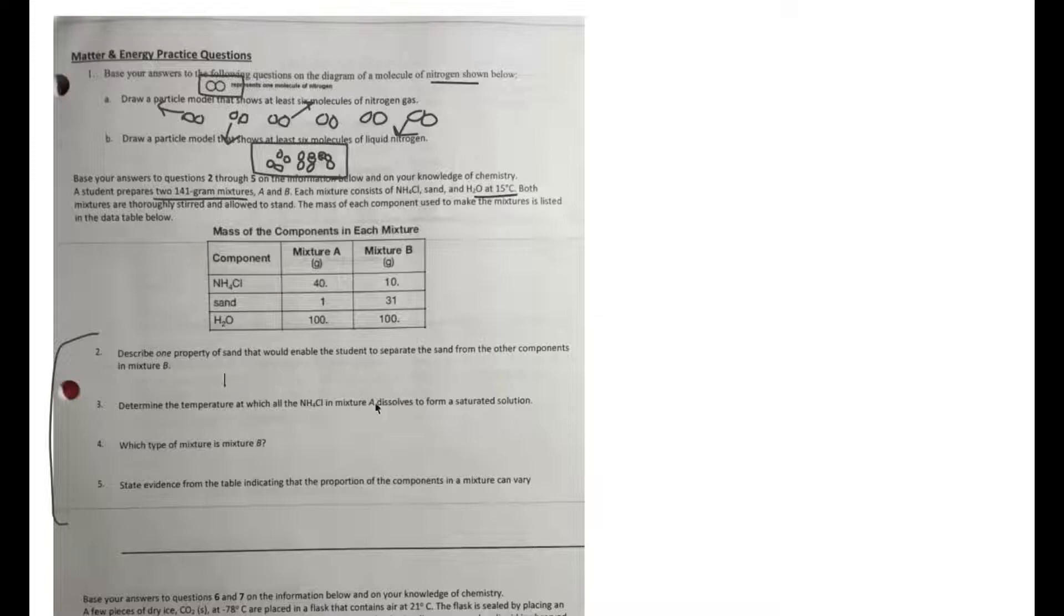I'm going to start typing my answers because I'm sick of drawing with my mouse. The first question says describe one property of sand that would enable the student to separate the sand from the other components in mixture B. When I hear sand, I think filtration. You have your other components with the H2O and NH4Cl, and they're allowed to stand. So we can definitely talk about filtration here, and the thing that makes filtration work is their different types of particle size. Let me type particle size of the sand varies.